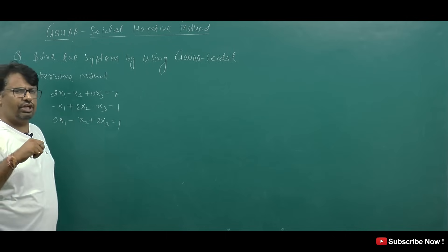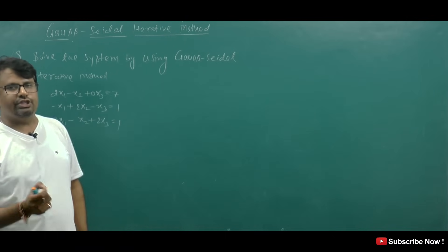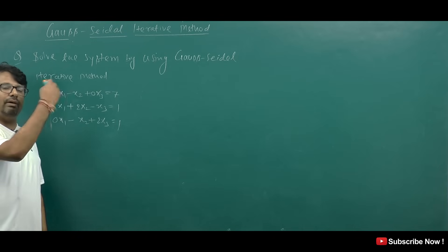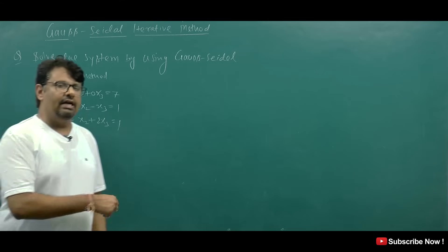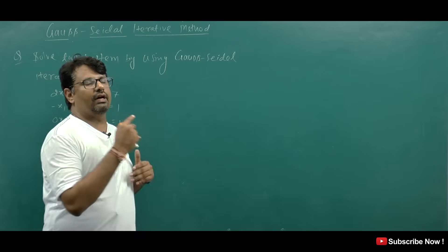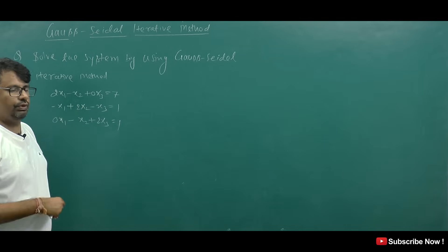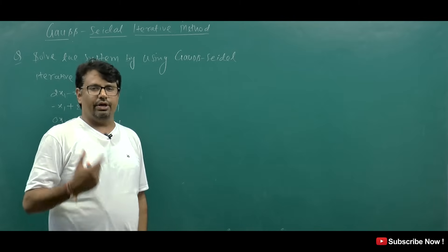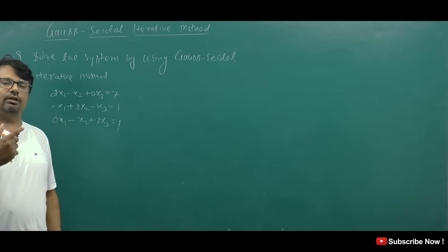This method is similar to the Jacobi Method which we have studied, but there is a little difference. In Jacobi Method, the iterations are more compared to this method — it is a longer method. But the Gauss-Seidel Method is a shorter method, because in every step we use the updated values cycle-wise. Now I will try to explain the theory through a question, because in Mathematics, I will try to explain as we go through the example.